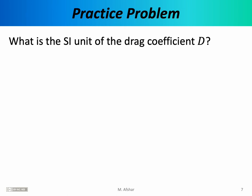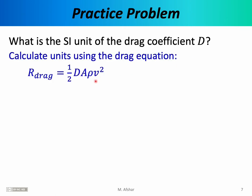We've been talking about the drag force, the reduced drag coefficient alpha, and the drag coefficient D. On the previous slide, I gave numerical values for drag coefficients of different shapes without SI units. Let's figure out the SI unit for the drag coefficient D. Whenever you encounter a new quantity and want to figure out its units, find an equation in which that quantity appears. For us, this is the equation that includes the drag coefficient, which we can write out fully as R_drag equals one-half times D times A times rho times v squared.